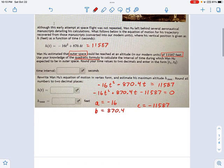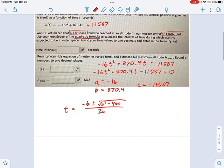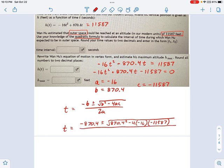We're just going to plug this into the old quadratic formula that we know and love to get our variable. Remember what this is: negative B plus or minus the square root of B squared minus 4AC all over 2A. So go ahead and plug these things in. This becomes negative 870.4 plus or minus the square root of 870.4 squared minus 4 times A, which is negative 16, and times C, which is negative 11,587. And that entire thing divided by 2 times negative 16.